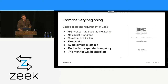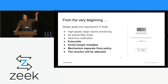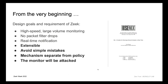Now the Zeek part. From the very beginning, the original Zeek paper from 1999 had design goals and requirements. One goal was high-speed, large-volume monitoring, no packet drops, real-time alerting — the usual goals. But there are four other design goals: extensible, avoid simple mistakes, mechanisms separate from policy — one of our favorites — and the monitor will be attacked.